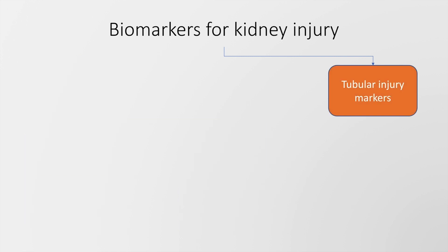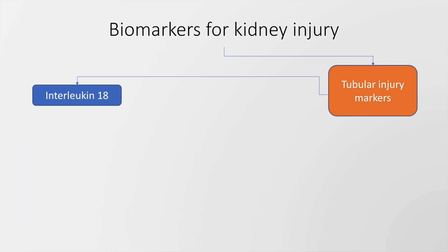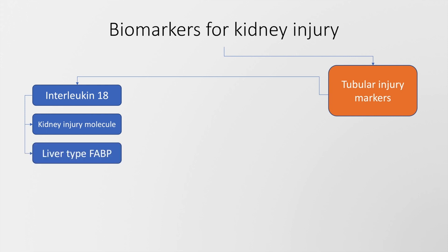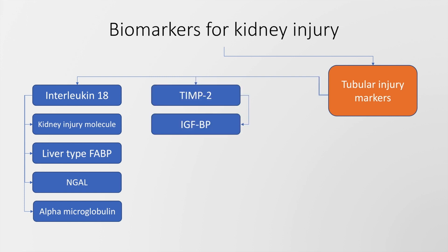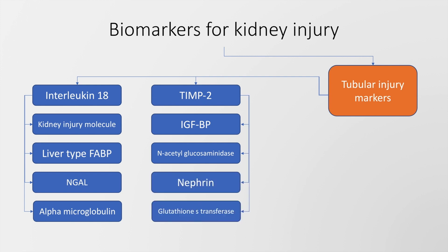Biomarkers of tubular injury include interleukin-18, kidney injury molecule (KIM), liver-type fatty acid-binding protein, neutrophil gelatinase-associated lipocalin (NGAL), alpha-microglobulin, TIMP-2, IGF-BP, N-acetyl glucosaminidase, nephrin, and glutathione S-transferase.